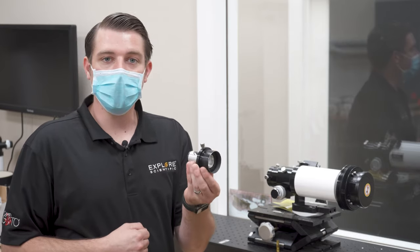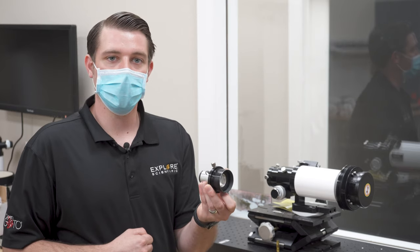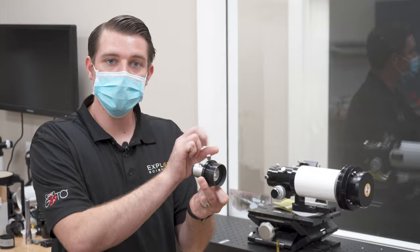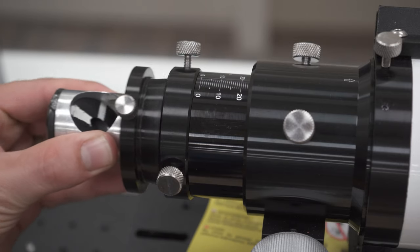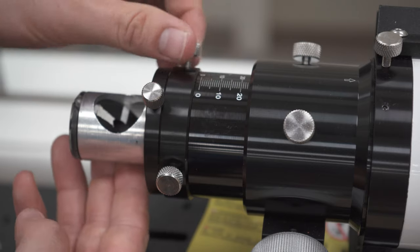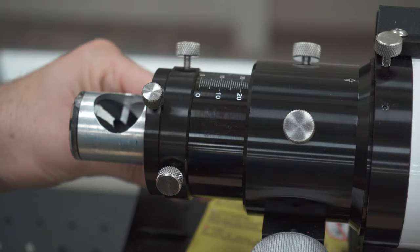Now you will install this into the back of your telescope into the focuser. You're then going to snug your tensioned collar to hold this in place and you want to make sure that it's nice and flush against the end of that focuser to ensure an accurate collimation reading.